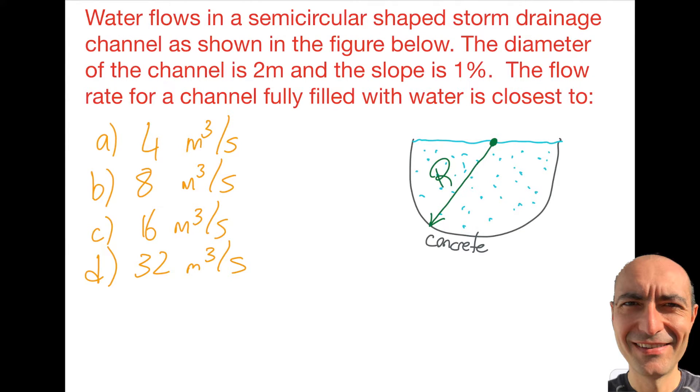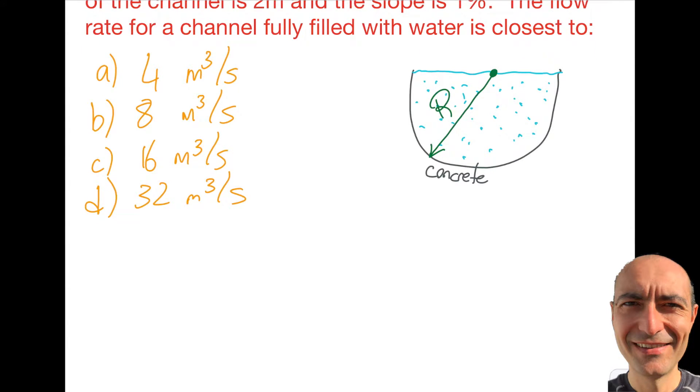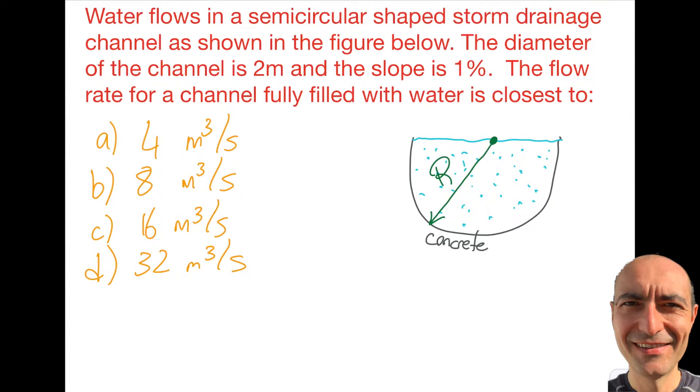Before going ahead, let's talk about this 1%, what's up with this 1%. That is the S value, the slope of the hydraulic grade line. S value is 1%, so if you convert that it's going to be 0.01.